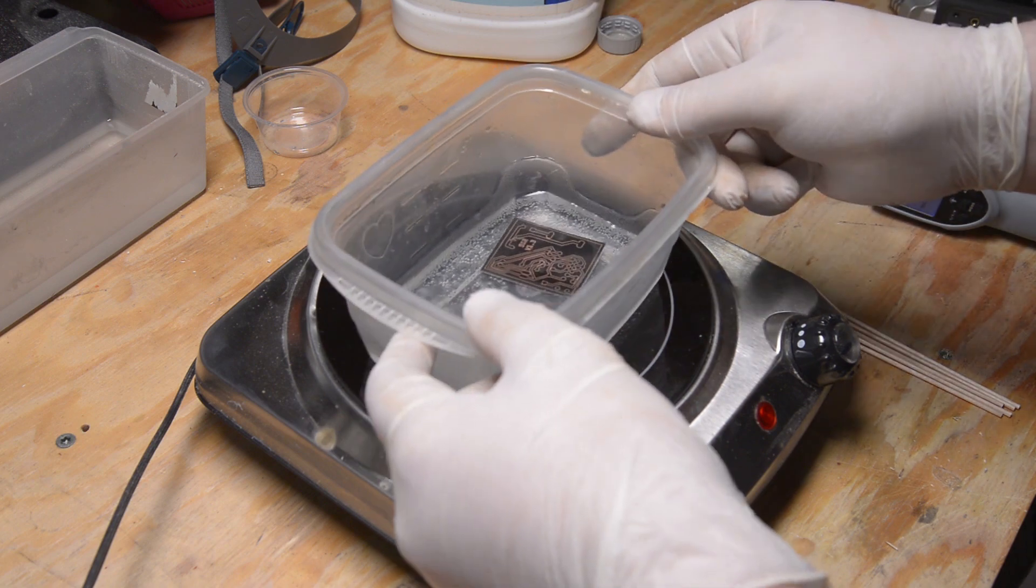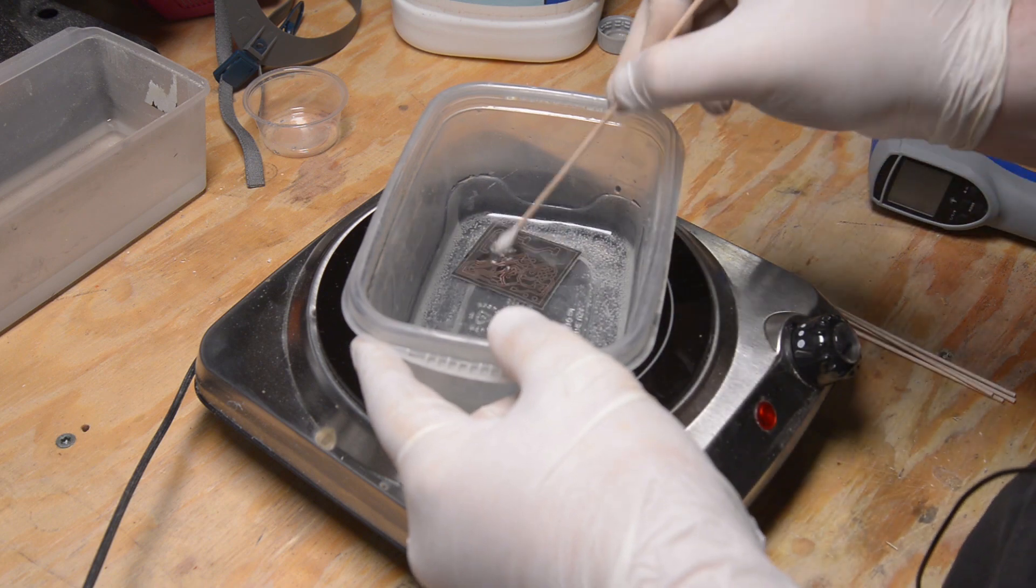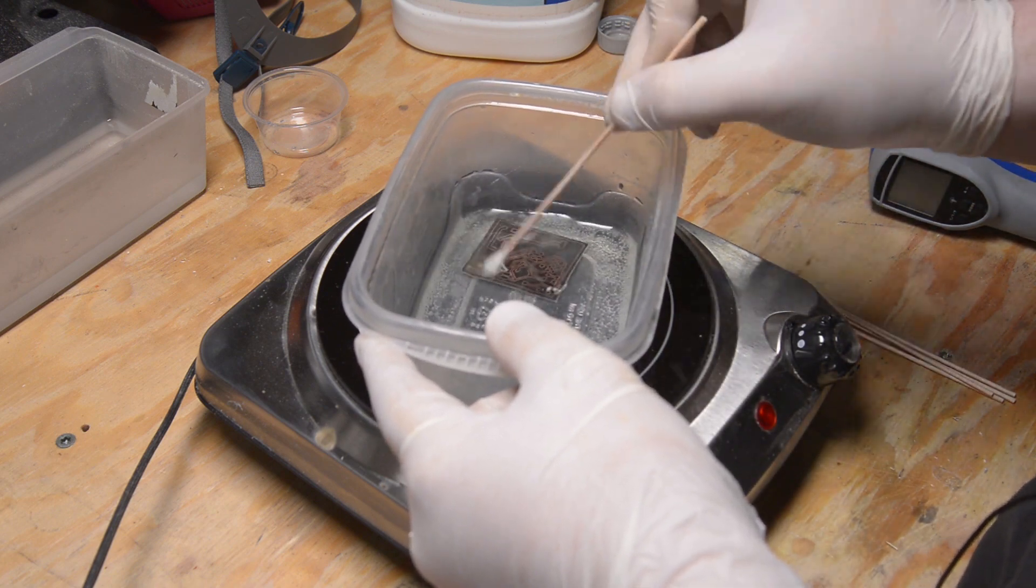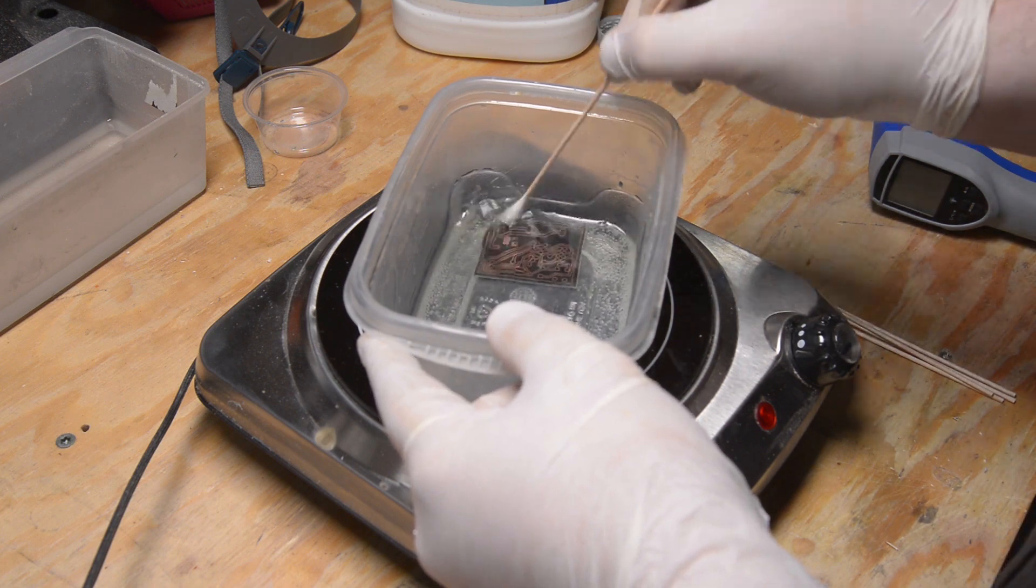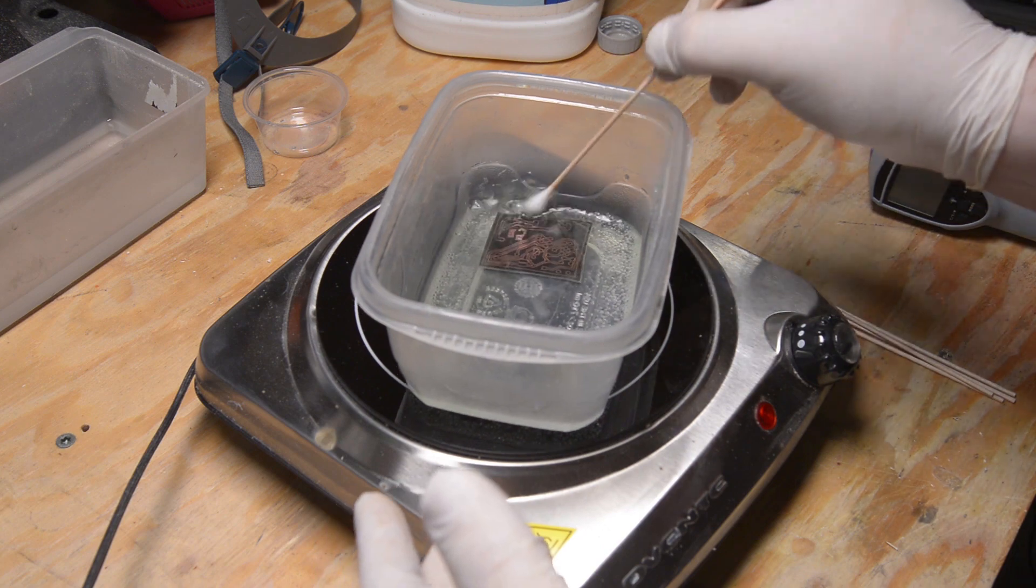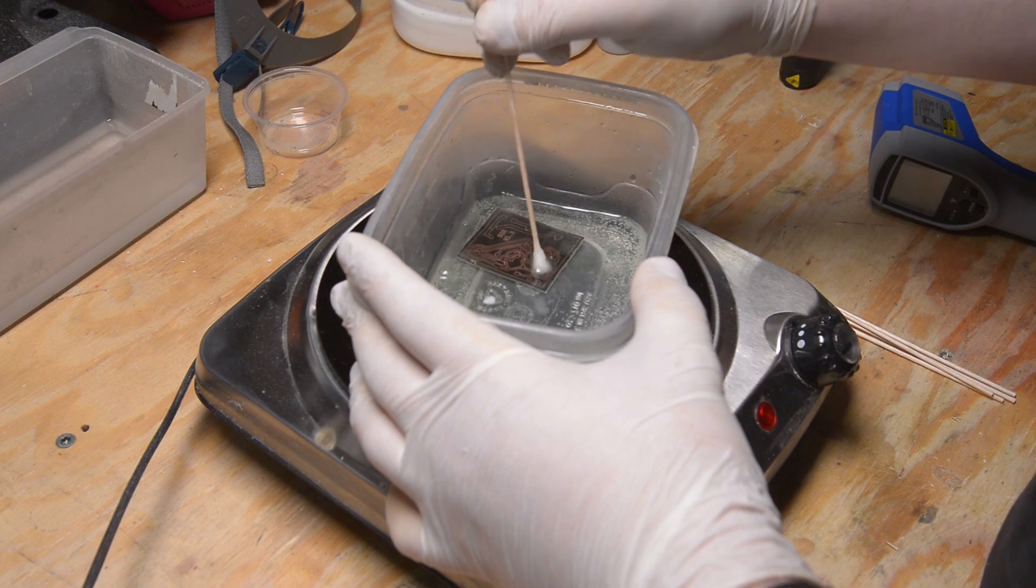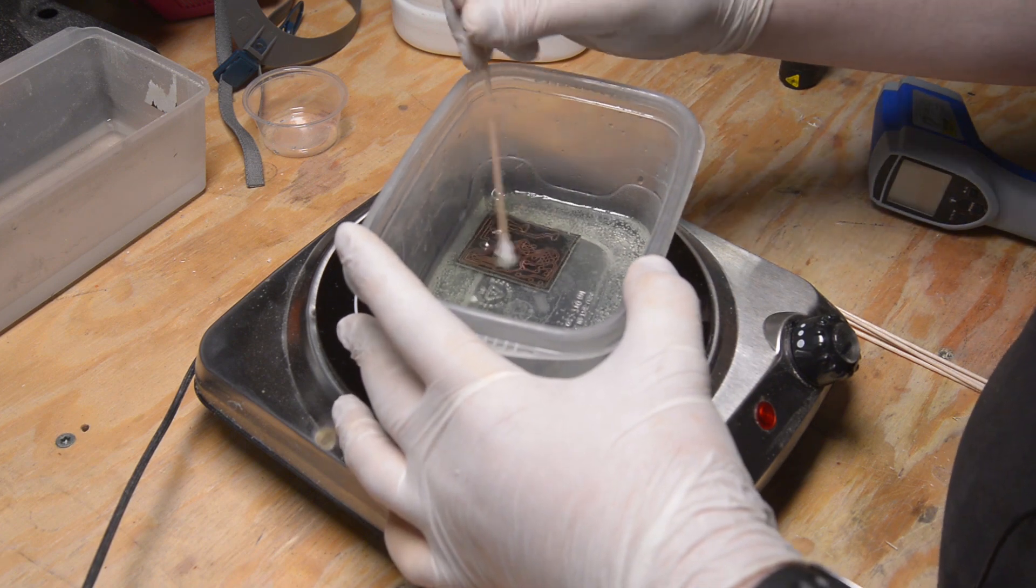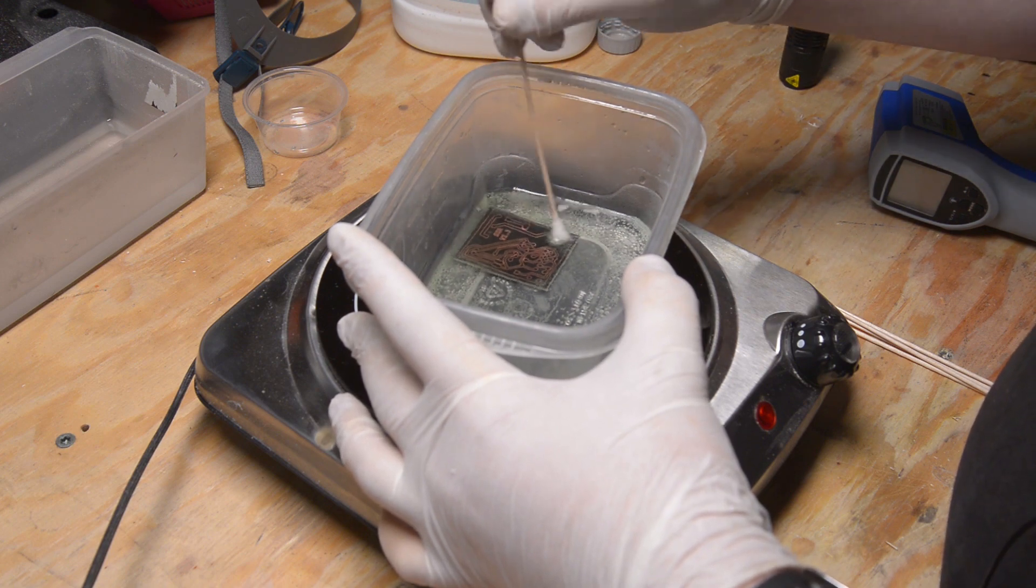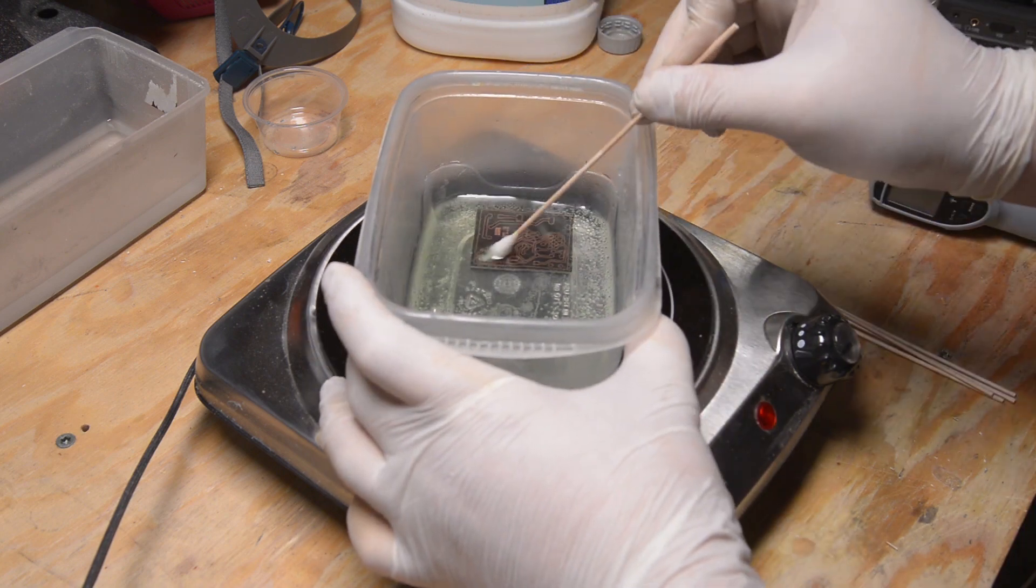So now we just put the board in, and we take - I use these kind of wooden Q-tips here but you can use whatever you want - and I just kind of rub it, keep it flowing over. You can actually see that the etchant turns a little bit green, and that is the copper wearing off of the board and into the solution. So we're just going to do this for a few minutes and it really shouldn't take very long before we start to see light coming through the other side when we use our flashlight.